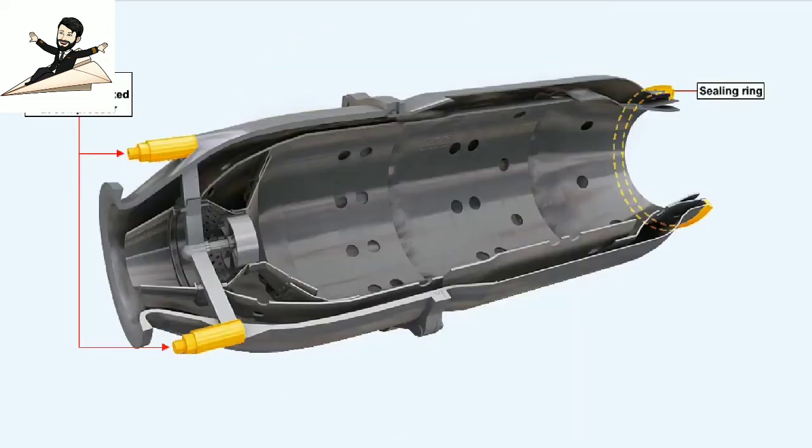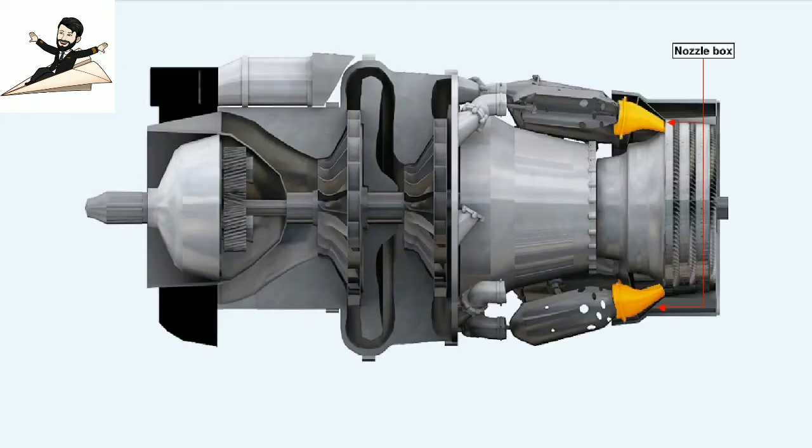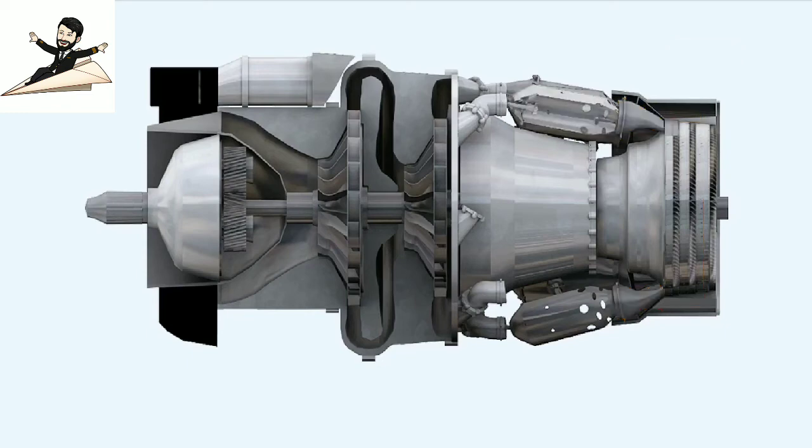The sealing ring at the turbine end of the combustion chamber allows for elongation of the chamber due to expansion. The chamber is fixed at the compressor end by being bolted onto it, and it cannot expand in that direction. The sealing ring allows the chamber to expand into the nozzle box, which is the portion of the engine immediately preceding the nozzle guide vanes, while maintaining a gas-tight seal between the chamber and the atmosphere.